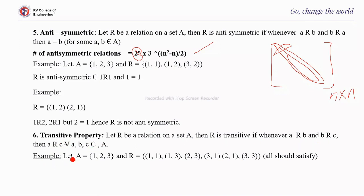Example: let A = {1, 2, 3} and R = {(1,1), (1,3), (2,3), (3,1), (2,1), (3,3)}. Consider (1,1) and (1,3): then (1,3) must be present — it is. Next, (1,1) and there is no other pair starting with 1 after (1,3) is accounted for. Then (1,3) and (3,1): (1,1) must be present — it is.